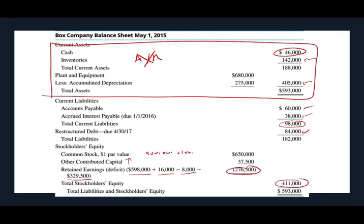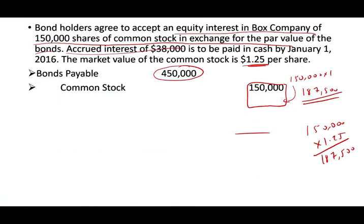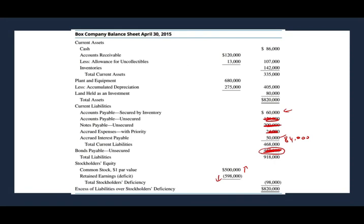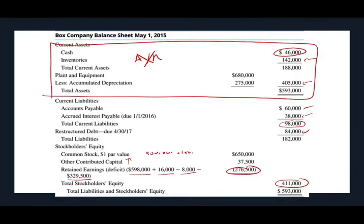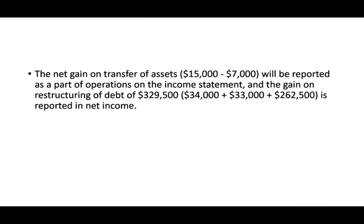We came out better than what we started with. We used to have $918,000 worth of debt — now the only debt we have is $182,000. Not bad at all. The net gain on the transfer of assets will be reported as part of income, and the gain on restructuring will also be reported as part of income.